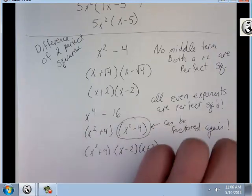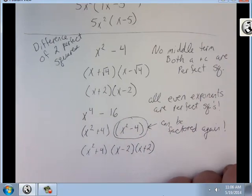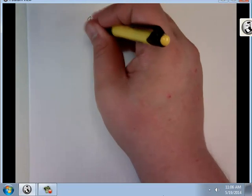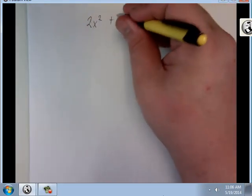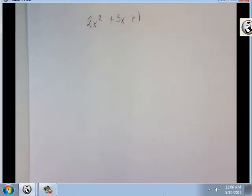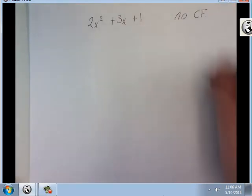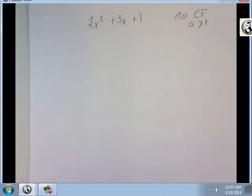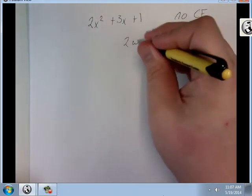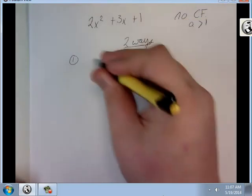Now, those I know are fairly simple. That's why I'm kind of going through them relatively quickly. What if you're given something like this? 2x squared plus 3x plus 1. No common factor. And a is greater than 1. What do we do? Two ways to do this.